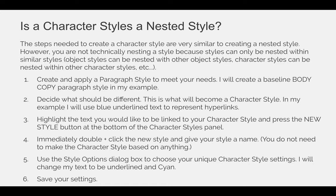Use the style options dialog box to choose your unique character style settings — you're going to choose what's different. So instead of all of the settings being repeated, it's going to be blank and you're just going to choose the settings that make it special or different. In my example, I'm going to use the underline option and change the color of the text to cyan. Then you save your settings, and now your character style is saved and it's linked to whatever text had been highlighted when you started this process.